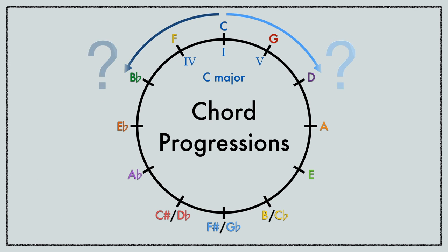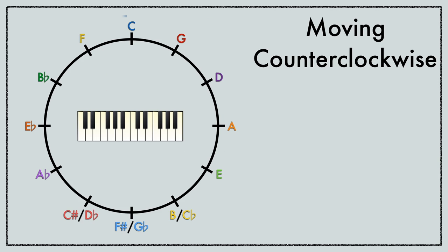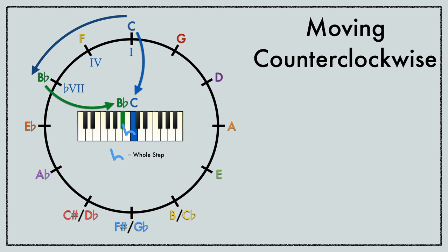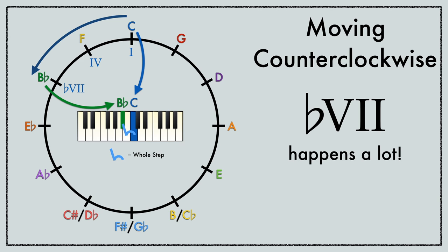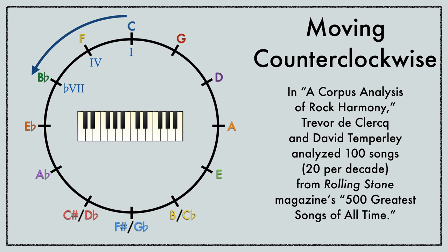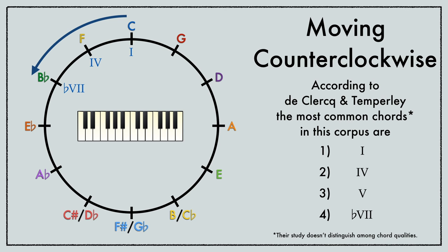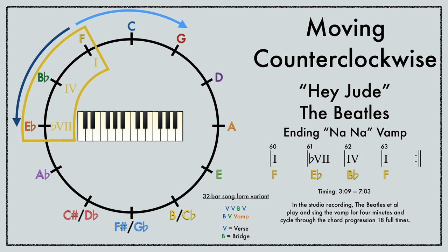Watch Axis of Awesome make fun of them here. So what happens if we expand farther around the circle? If we go counterclockwise, we add a chord a whole step below the key note. This flat seven chord happens a lot. According to two theorists who did a corpus analysis of Rolling Stone's 500 greatest songs of all time, it's actually the fourth most common chord after I, IV, and V. A famous example is the huge vamp at the end of the Beatles' Hey Jude.